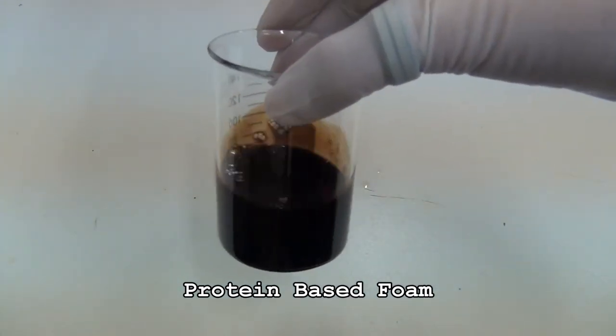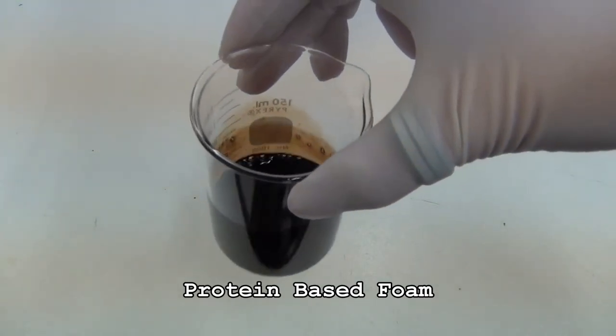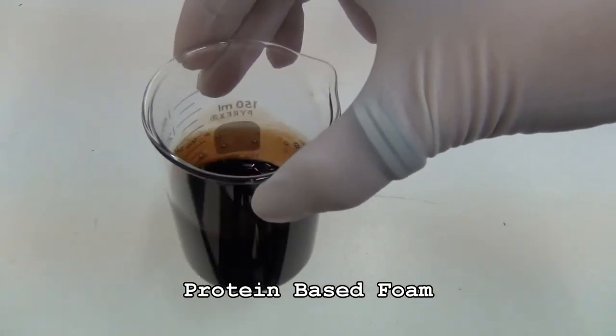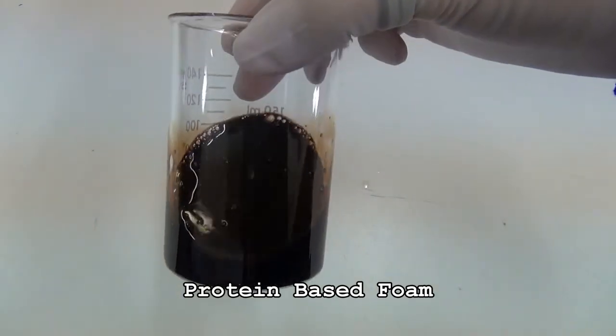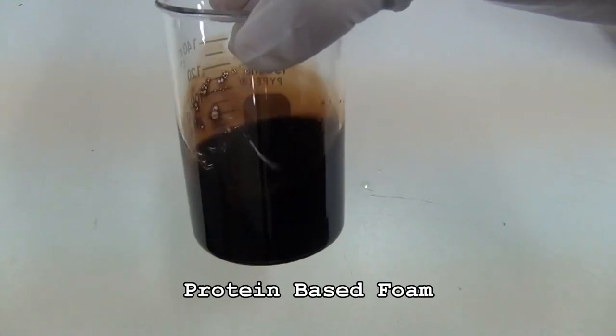Fluoroprotein foams have stabilizing additives that protect against freezing, corrosion, bacterial decomposition, and fuel pickups. The protein is considered film forming. It is designed to form a vapor preventing film on the surface of the liquid fuel similarly to an AFFF.